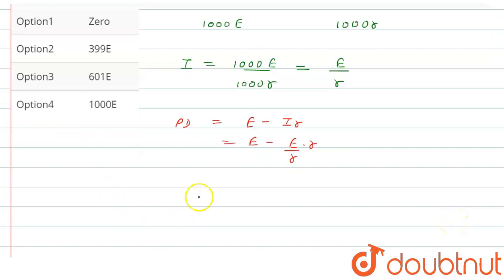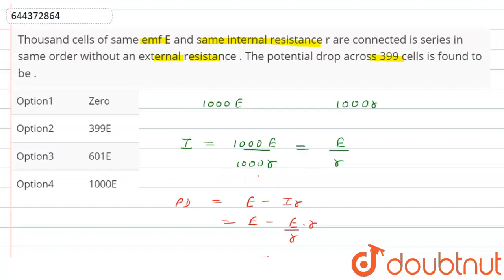So from here what we get, we get that potential drop across first cell is zero. So if potential drop across first cell is zero, then definitely potential drop across 399 cells is also zero.